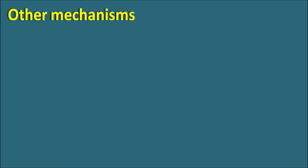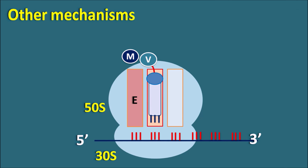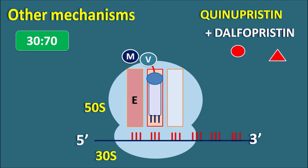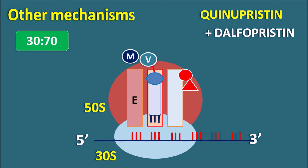Other mechanisms: quinupristin plus dalfopristin can act on bacterial protein synthesis and inhibit it. These drugs are given in a ratio of 30 to 70. Quinupristin and dalfopristin bind to the 50S subunit, forming a ternary complex, which results in inhibition of the 50S subunit and thereby inhibits protein synthesis. Quinupristin and dalfopristin are the streptogramins.